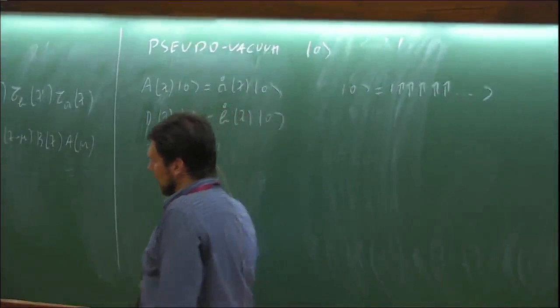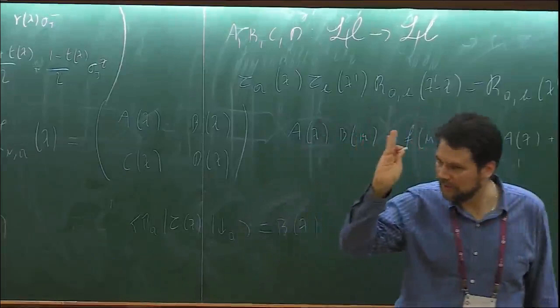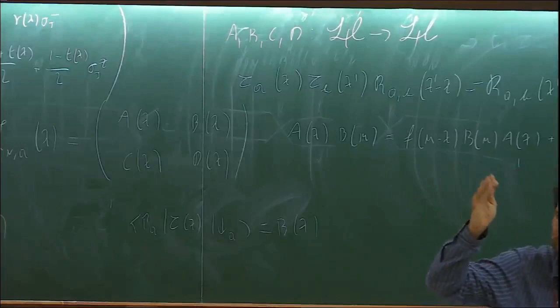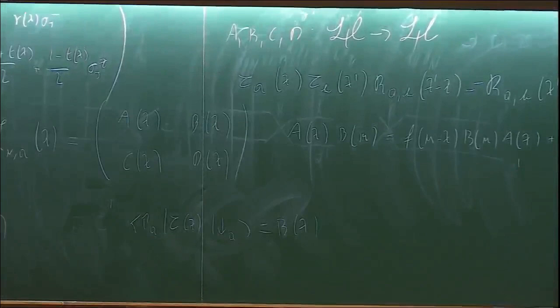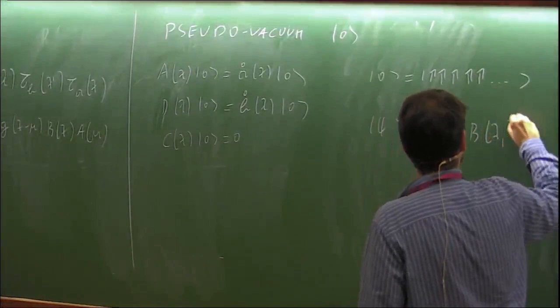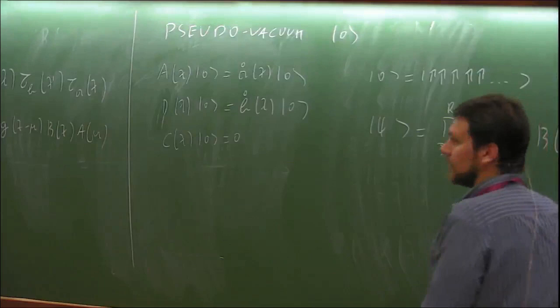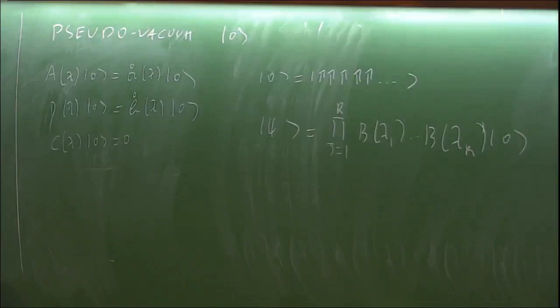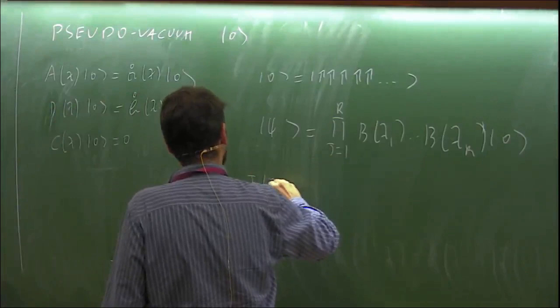This is a state with all spins up, and B flips one spin up to down — not a particular spin of the chain, but it changes the magnetization by one in the whole chain in a very non-local way. It is natural to look for typical eigenstates in a sector with R magnons as the product of a sequence of B operators acting on this vacuum.